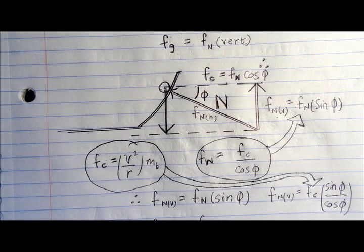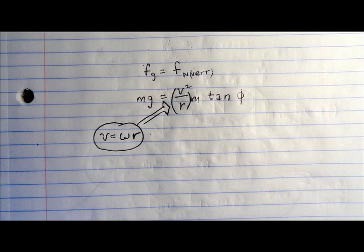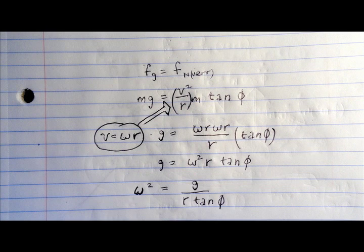I want to use a metronome to check our work so we can express v in terms of omega. The mass drops out and the r's cancel and we solve for omega.